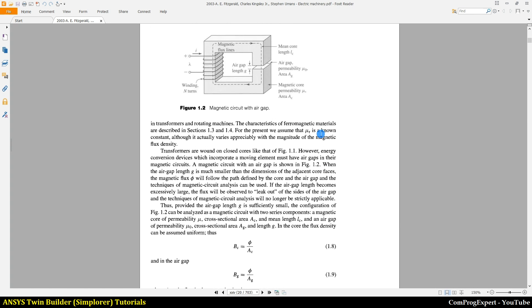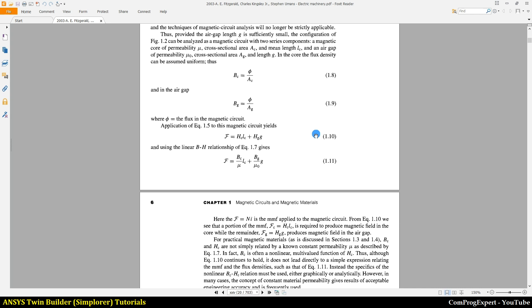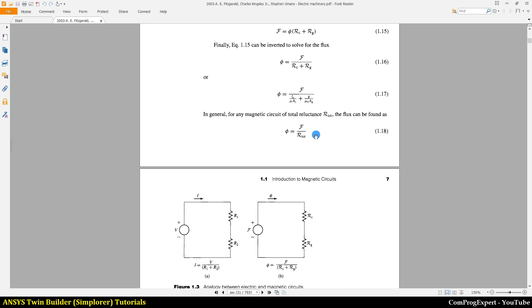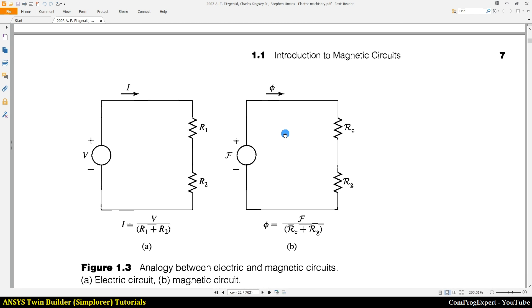You know the modeling and the magnetic equivalent circuit model of this problem, we have a current source or a flux source here and we have the reluctance of the core and reluctance of the air gap.